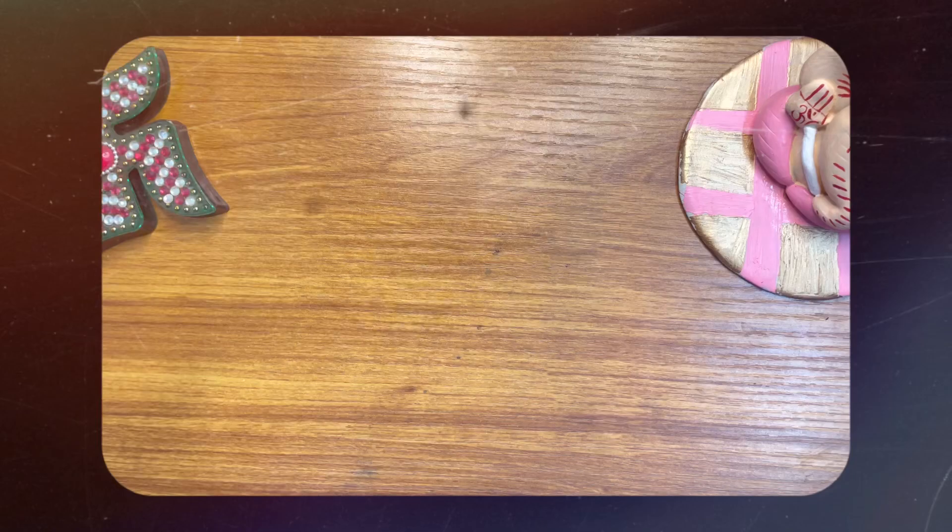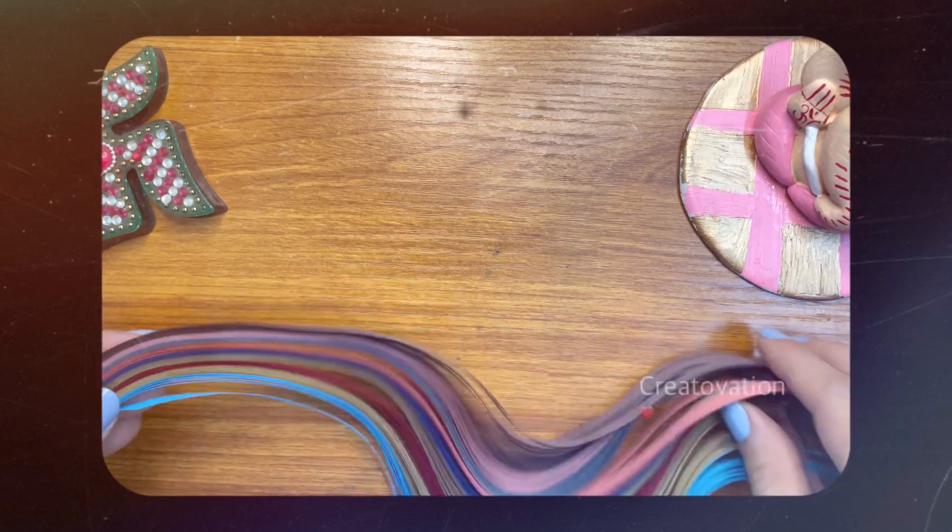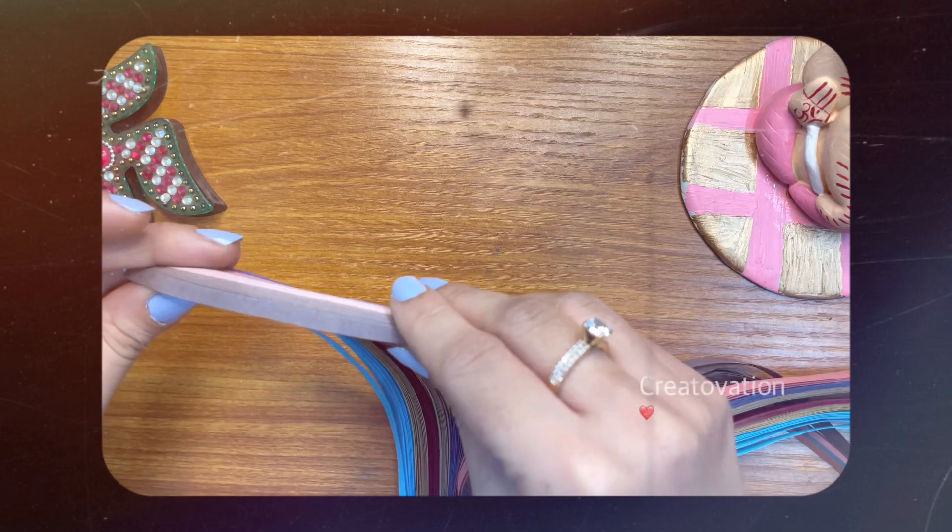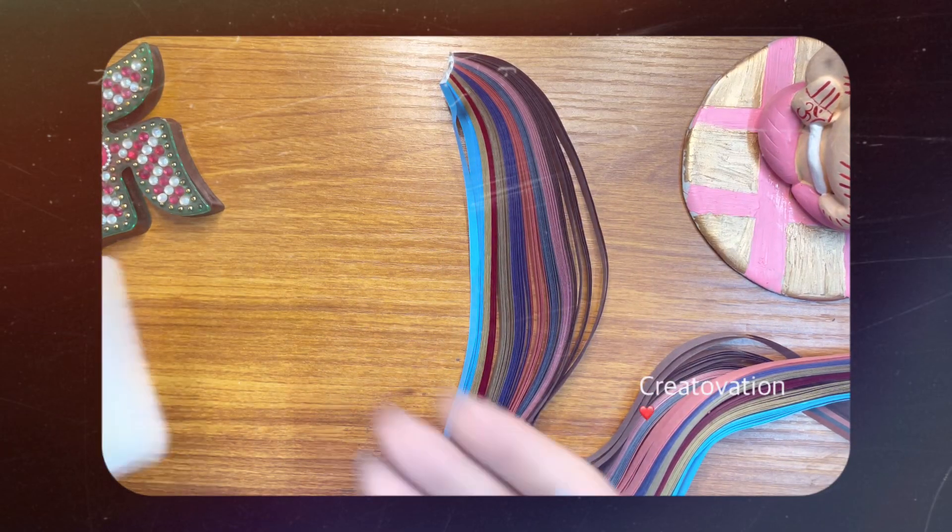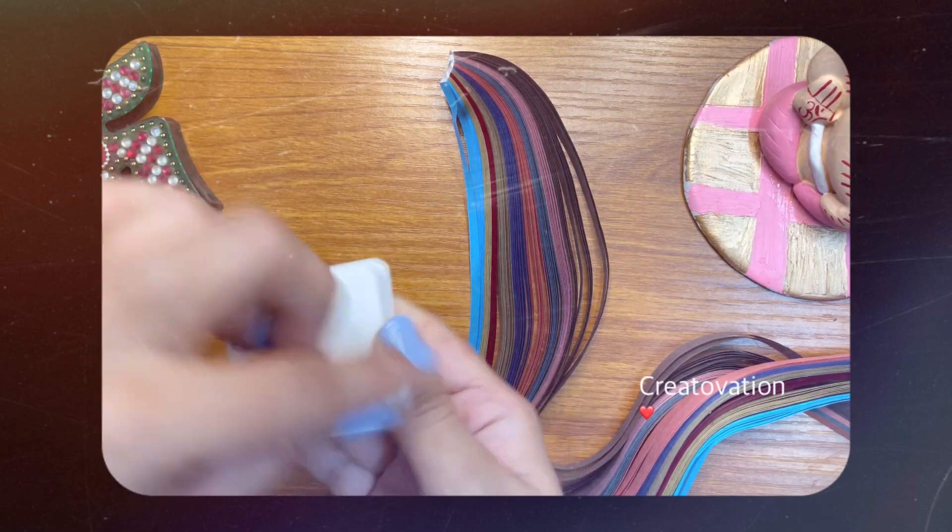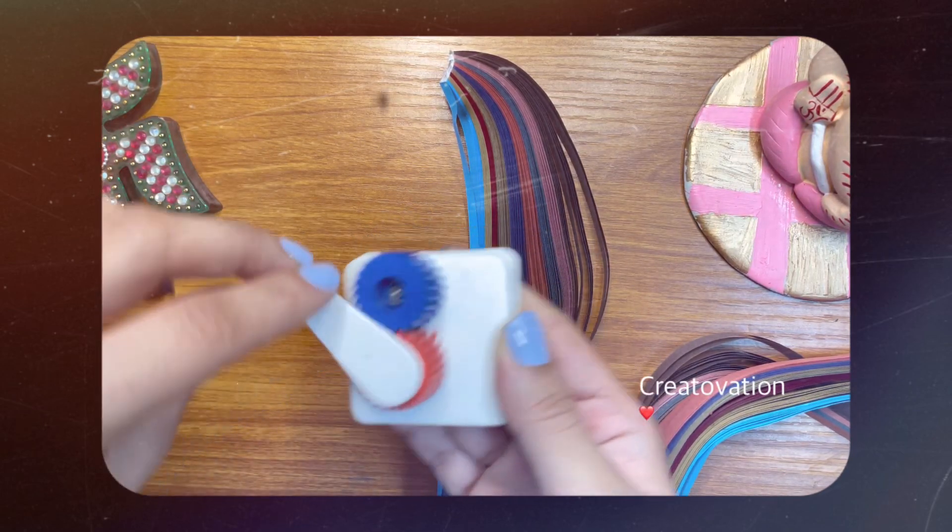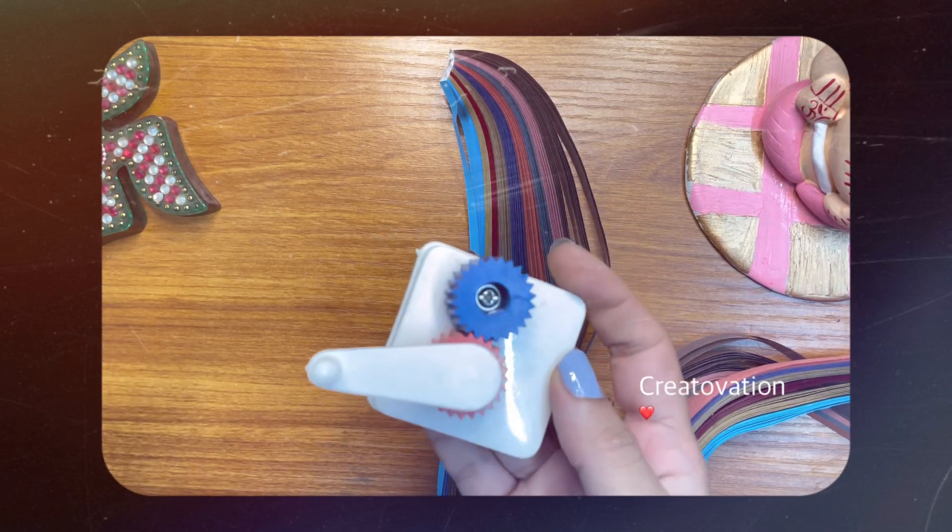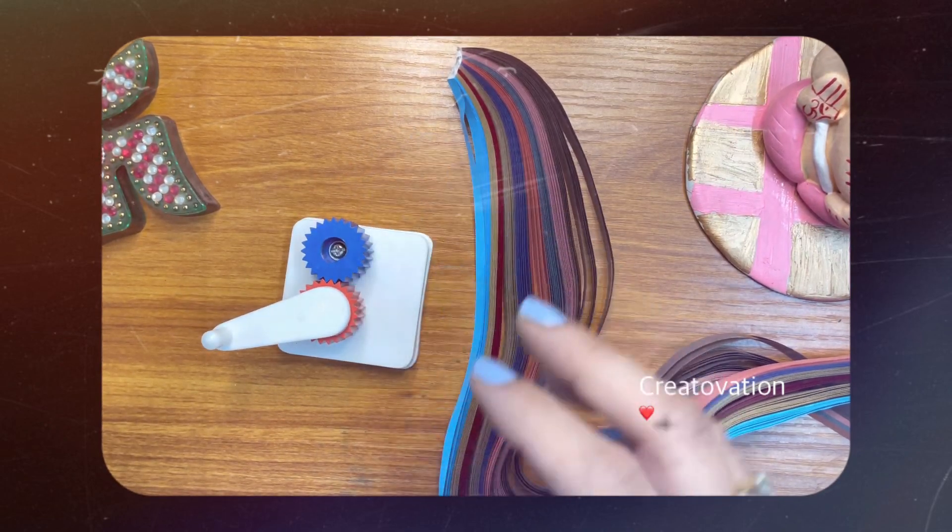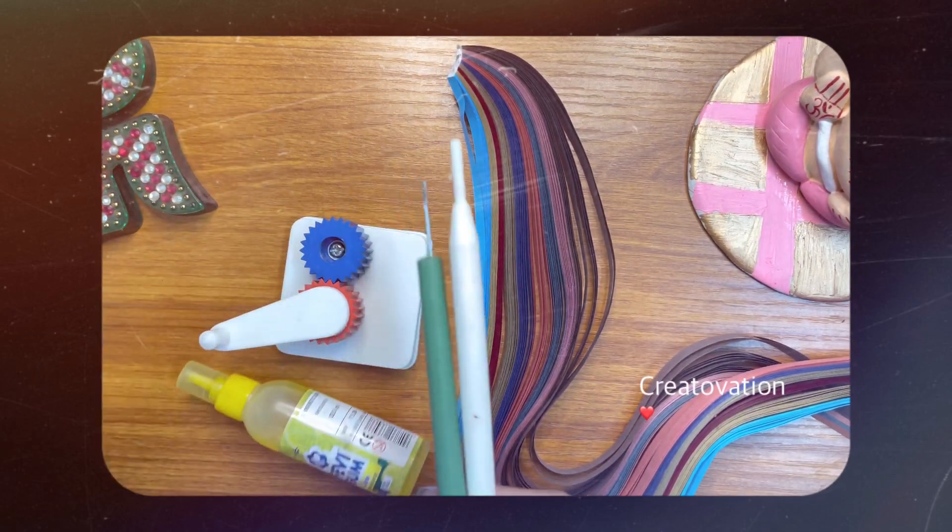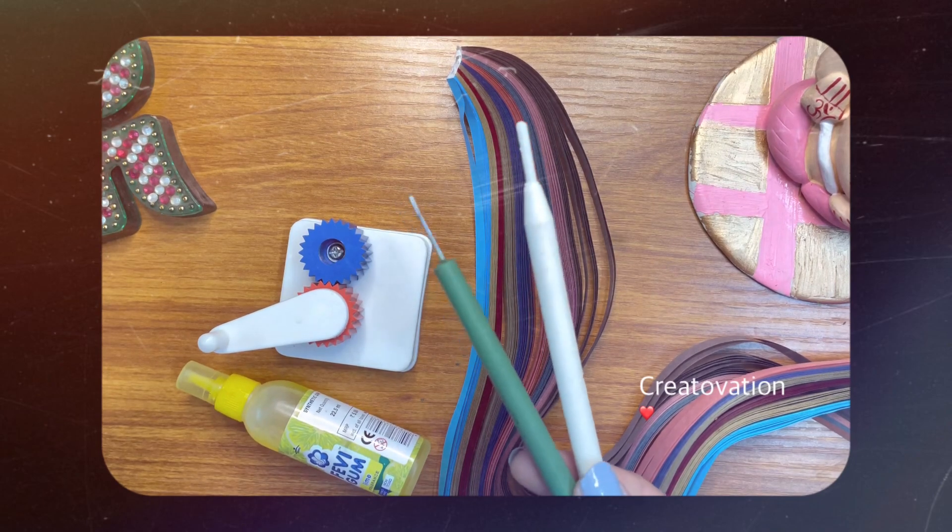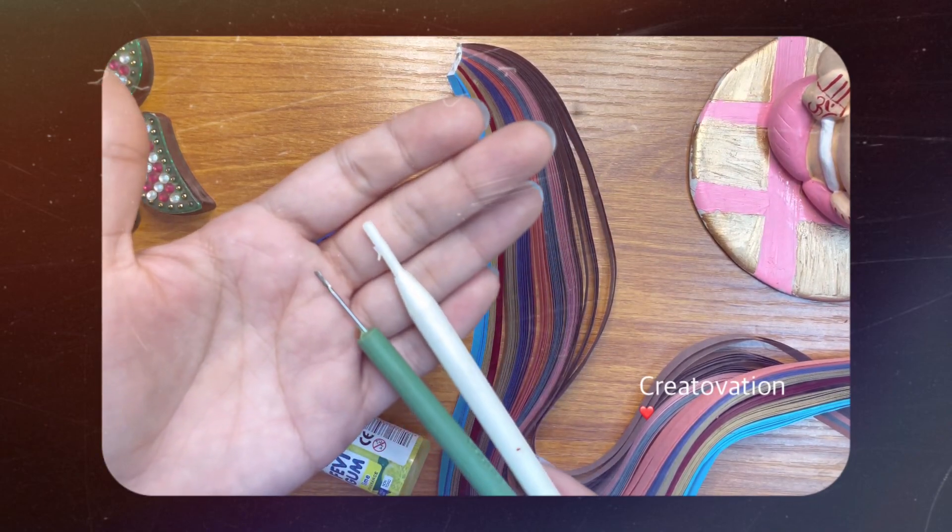So without any further ado, let's get into the video. For paper quilling, you will need quilling strips—I'm using thin paper strips. The next thing you need is a quilling crimper; this is such a cool device and makes quilling very interesting. Then you'll need glue—any glue will work—and paper quilling tools, which are called paper quilling needles.